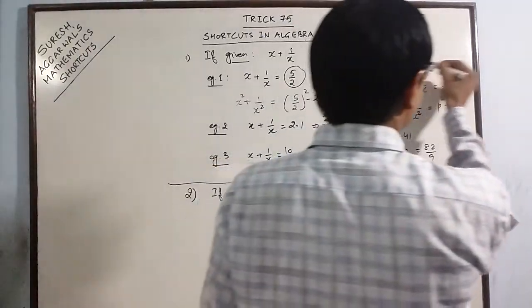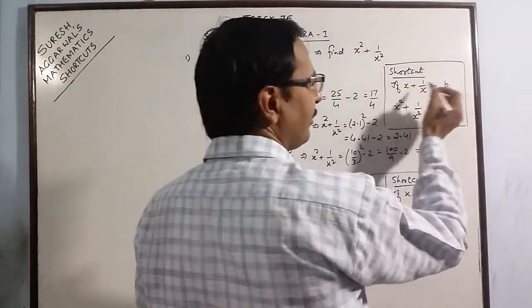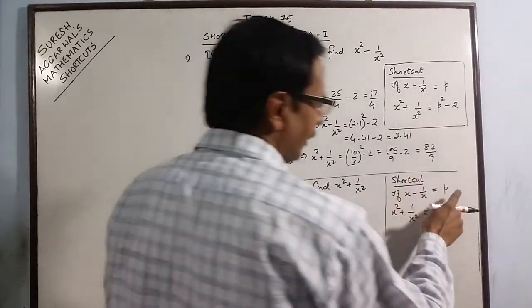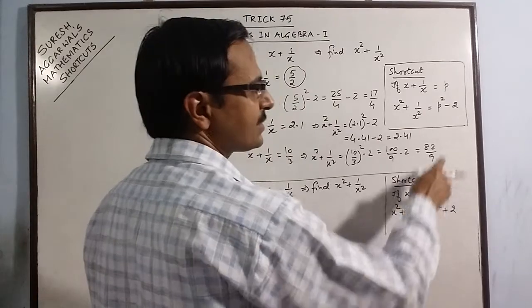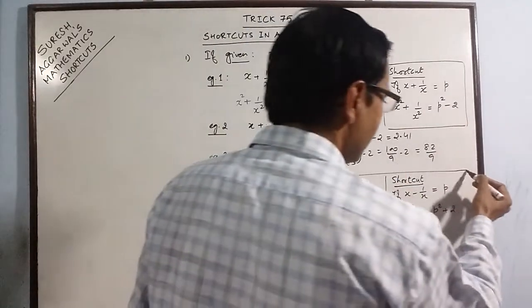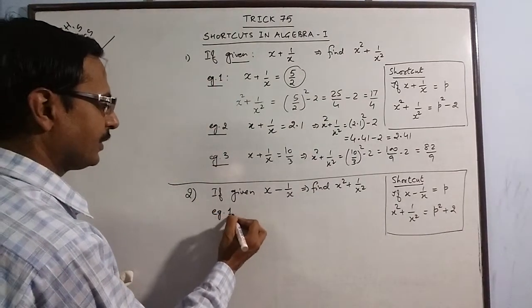This is the shortcut for the value p when the expression is x plus 1 by x and value p when it is x minus 1 by x, just change the sign in between p squared and 2. Let us take one more example of this type.